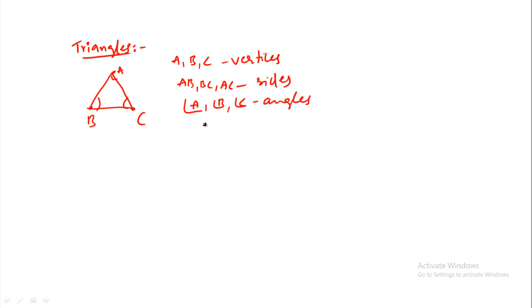The first thing: the sum of the angles A plus B plus C is always 180 degrees. This is the sum of angles in a triangle.